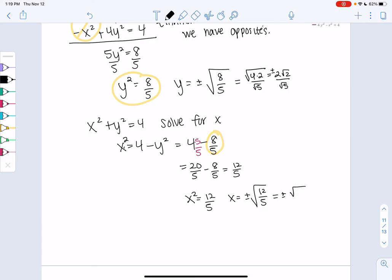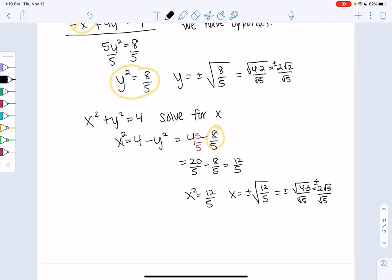so 2 root 3, all over root 5, plus or minus. And so we have four solutions. So let's organize them.